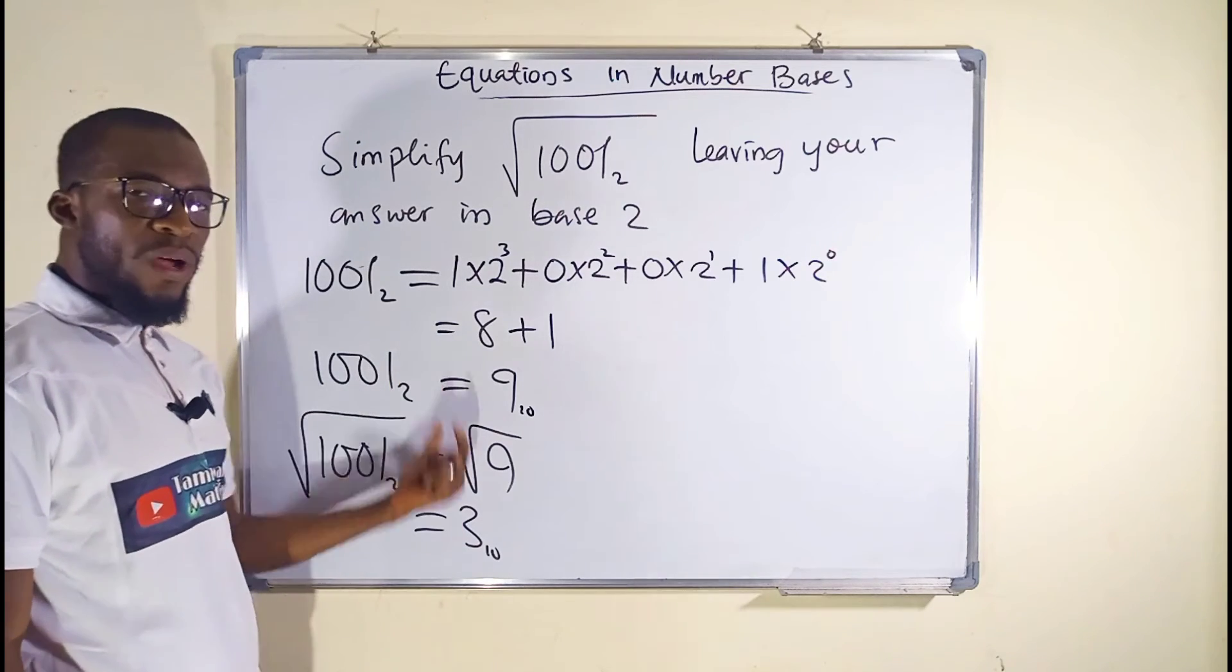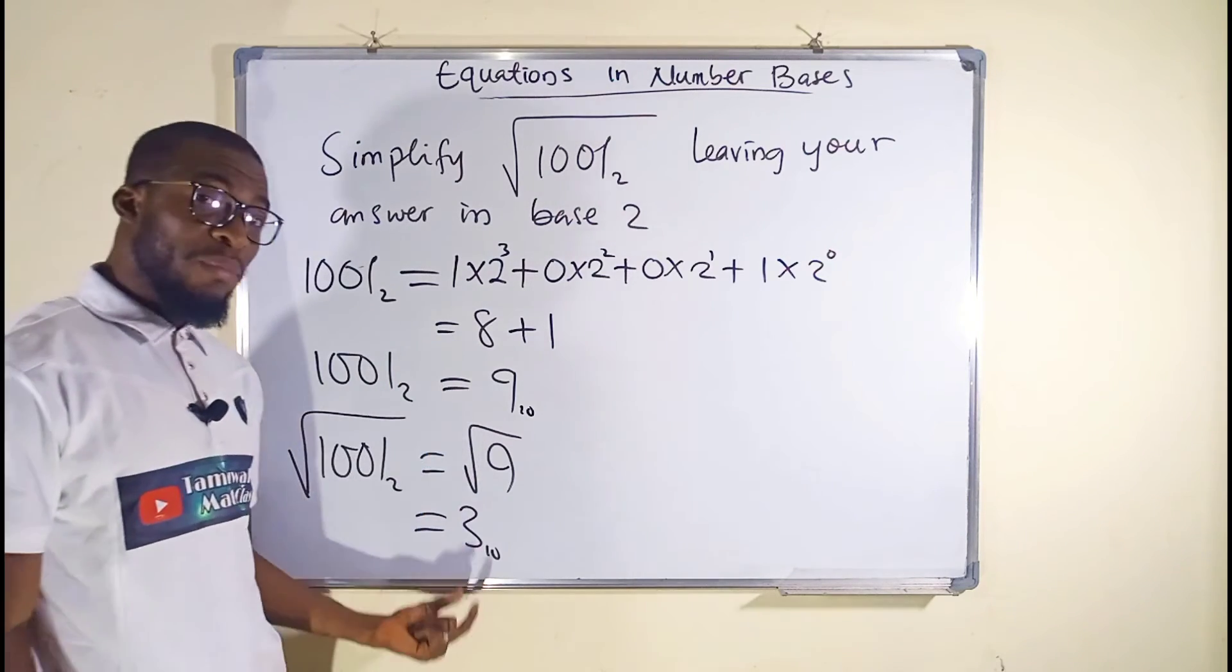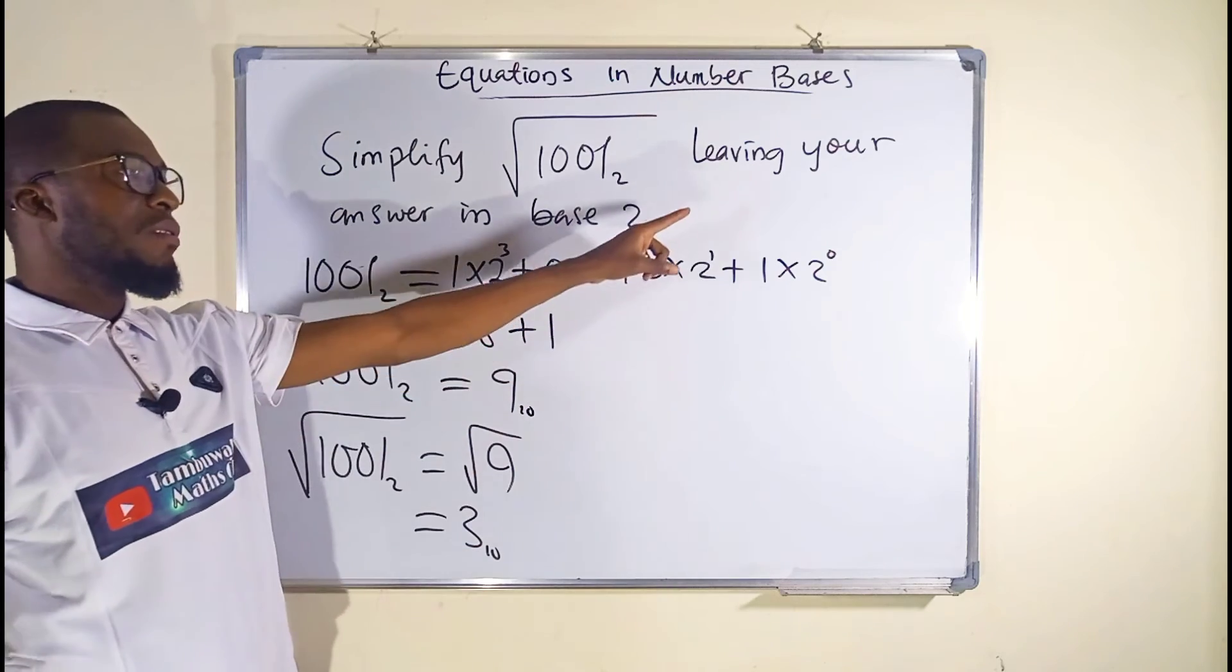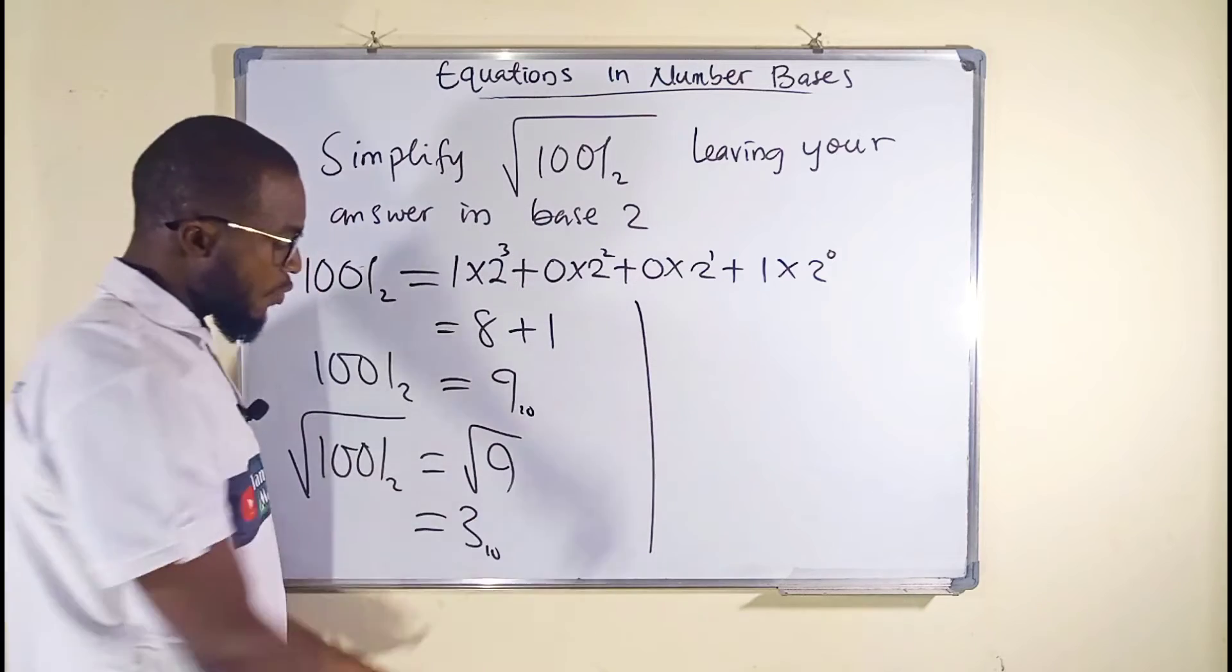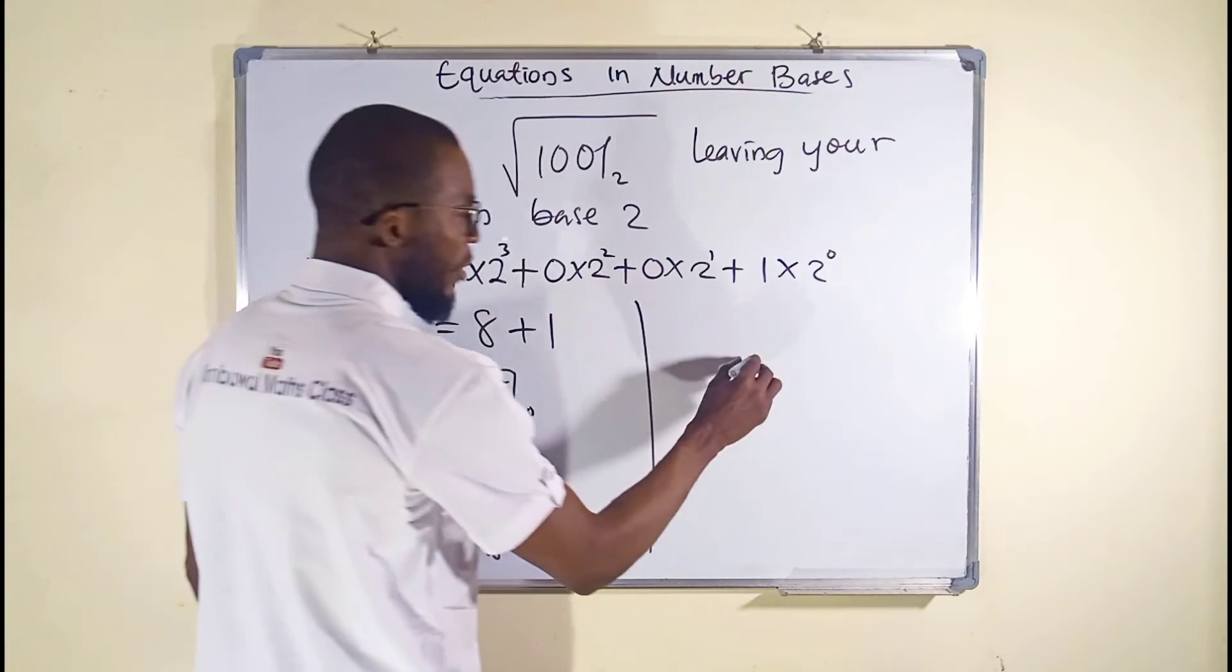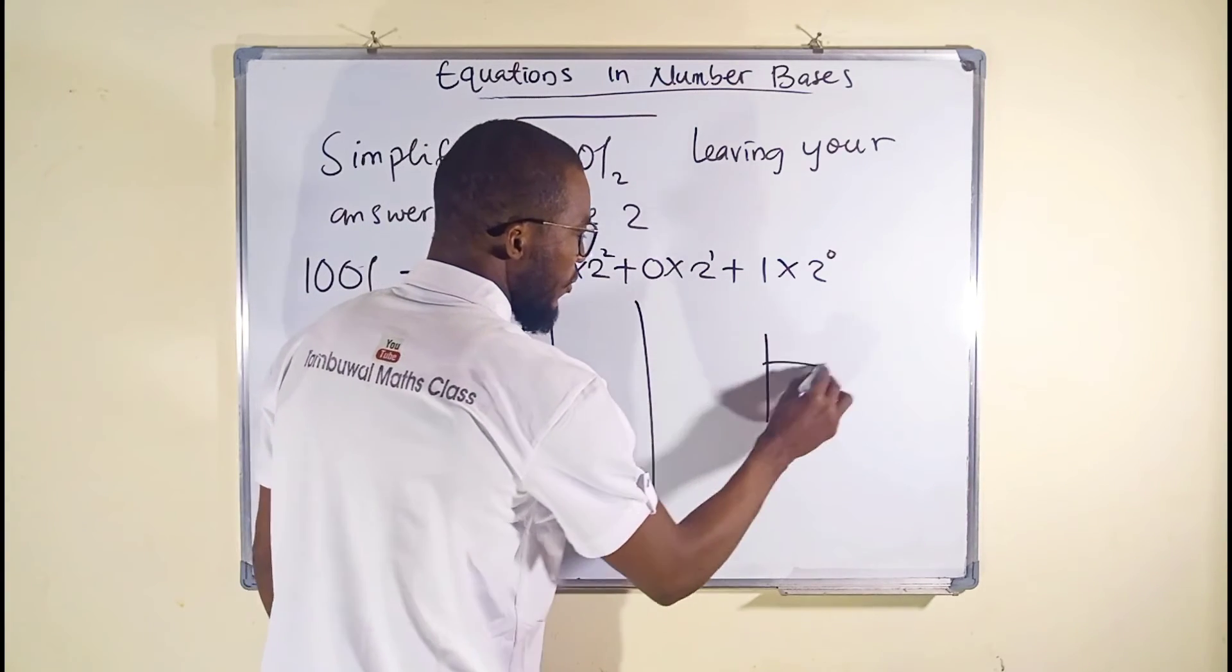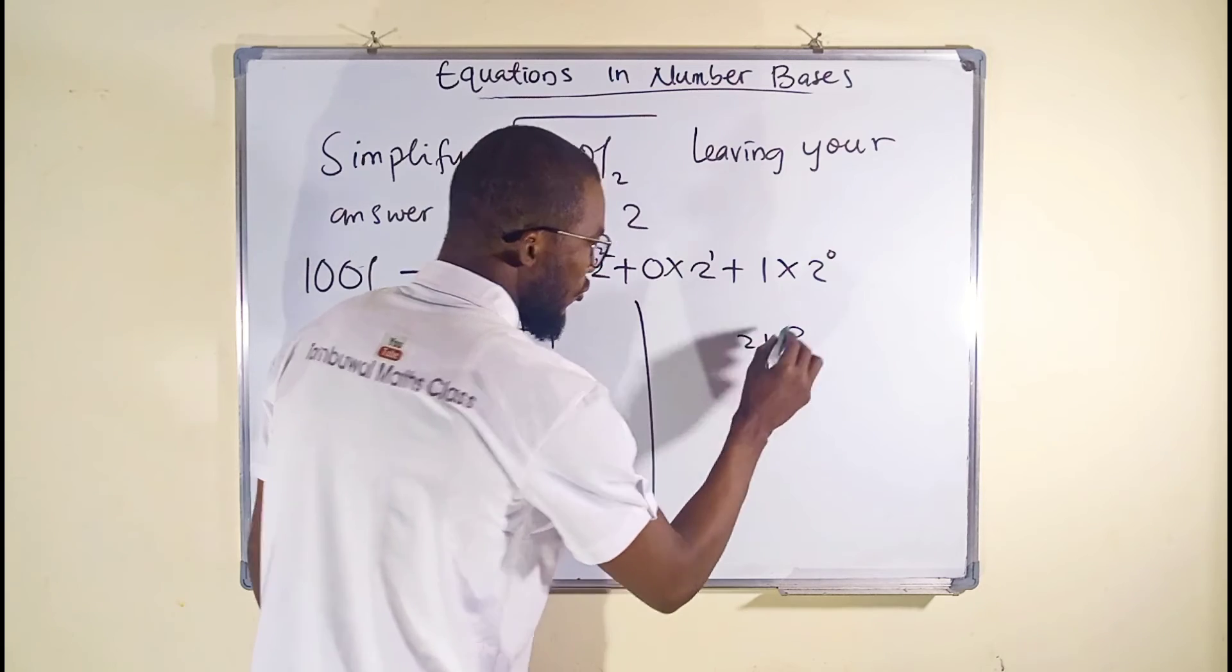The square root of 1001 in base 2 is the same thing as 3 in base 10. But the question says we should leave the answer in base 2. So we want to now convert 3 into base 2 by forming a successive division of this number using 2.